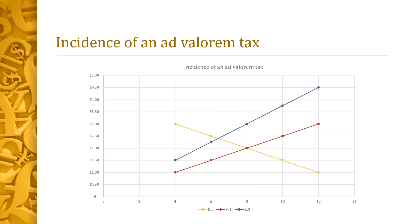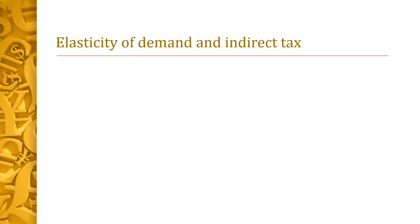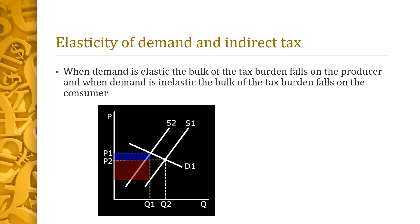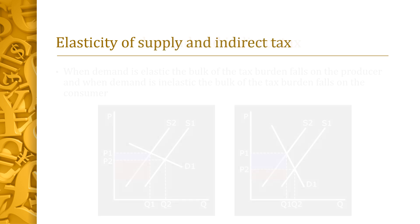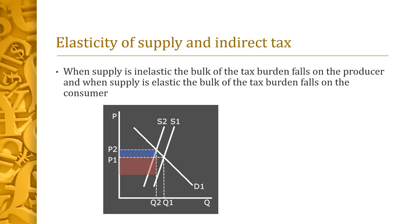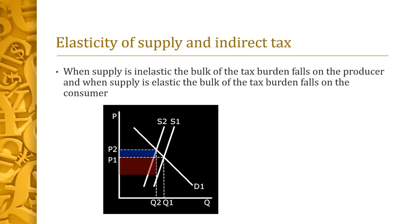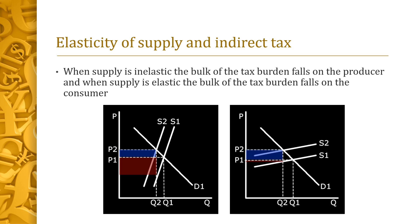Similar effects can be seen with ad valorem taxes, with the key difference being that when we see a left shift of supply, the supply curve also gets steeper, because at each price an increasing amount of tax is added. When demand is elastic, the bulk of the tax burden falls on the producer. When demand is inelastic, the bulk falls on the consumer. When supply is inelastic, the bulk falls on the producer, and when supply is elastic, the bulk falls on the consumer.